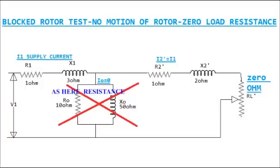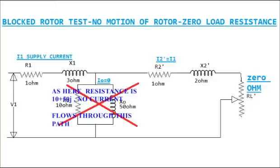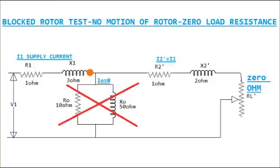As RL dash is 0, the resistance of R0 plus X0 becomes more. Resistance of R0 plus X0 is 10 plus 50 j, while that of R01 dash and X01 dash is 2 plus 5 j ohm, so current flows through that path. Now we can measure the values of R01 and X01 of the circuit.